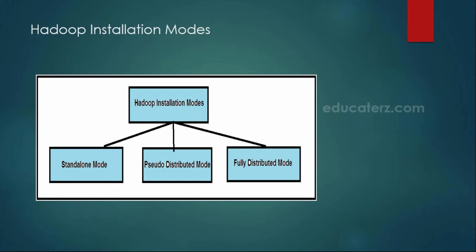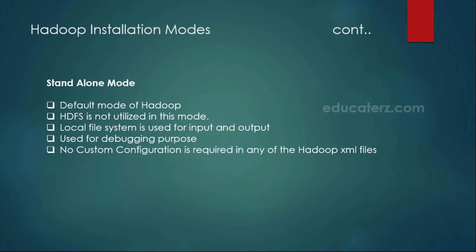Hadoop installation modes. We have three types of installation modes in Hadoop: standalone mode, pseudo distributed mode, and fully distributed mode. The standalone mode is the default mode in Hadoop. In this mode it will not use any HDFS — it simply uses your local file system. Nothing is stored as part of the Hadoop Distributed File System. It is mainly used if you want to debug code without HDFS. In this mode you will not be modifying any configuration files; directly download and update your environment variables. You don't even need to update any of the XML files.